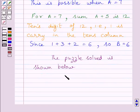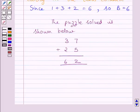So we can solve the puzzle as 37 plus 25 gives 62. The required value of A is 7 and required value of B is 6.